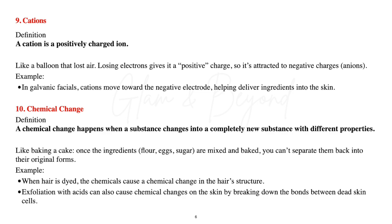Number ten, chemical change. A chemical change happens when a substance changes into a completely new substance with different properties. Like baking a cake — once the ingredients like flour, eggs, and sugar are mixed and baked, you cannot separate them back into their original form. Another example is when hair is dyed: the chemicals cause a chemical change in the hair's structure. Exfoliation with acids can also cause a chemical change on the skin by breaking down the bonds between dead skin cells.